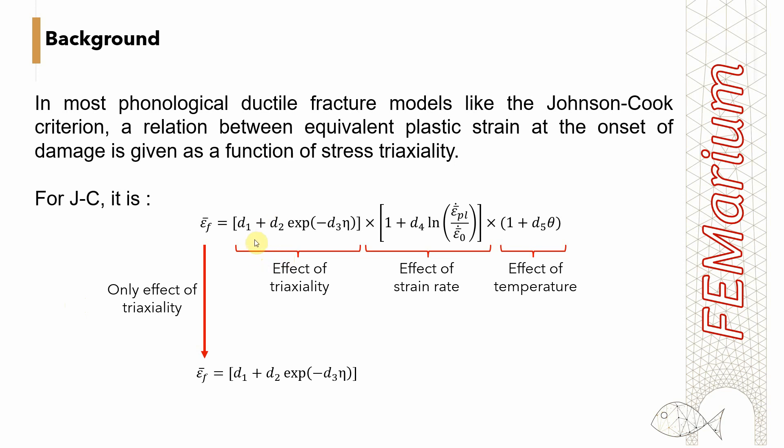The Johnson-Cook formula: we have a fracture strain as a function of triaxiality (I call it tau) and strain rate and temperature. So to use this model, Johnson-Cook, we need to calibrate d1 to d5 as material parameters. In case that we have just normal temperature and we are focusing on one strain rate, then we can ignore these two terms and simply write the Johnson-Cook based on the stress triaxiality ratio. This is an exponential function of stress triaxiality. Then we need to calibrate d1, d2, and d3 as material parameters.